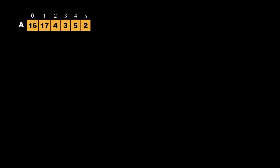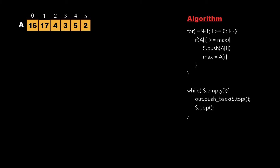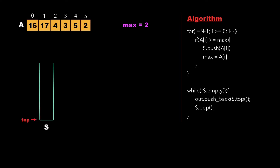Now let's have a look at the approach to solve this particular problem. We consider the same example where the size of the array was 6 and the array elements were 16, 17, 4, 3, 5, 2. Initially we create a variable called max and initialize it with the last element of the array, so the initial value of max will be 2. We also create a stack and name it as s.